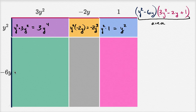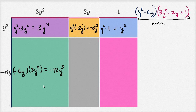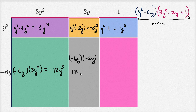Now this green one: the height is negative 6y times the width, 3y squared — negative 6 times 3 is negative 18, and y times y squared is y to the third power, so negative 18y to the third. The area of this gray rectangle: height negative 6y times width negative 2y — negative 6 times negative 2 is positive 12, and y times y is y squared, giving 12y squared. And finally, negative 6y times the width of one is negative 6y.